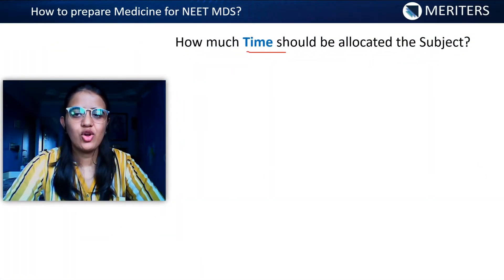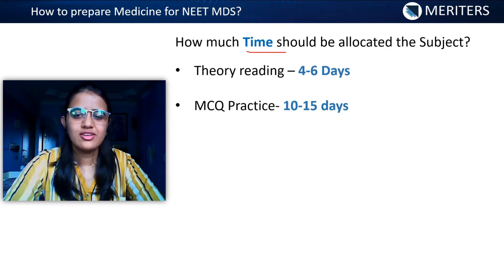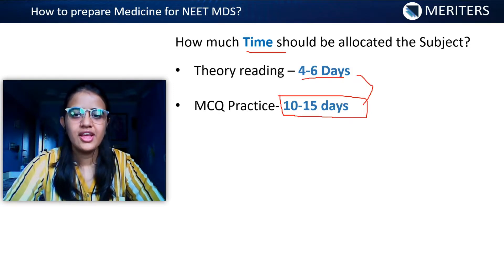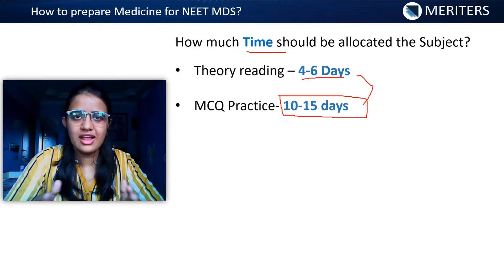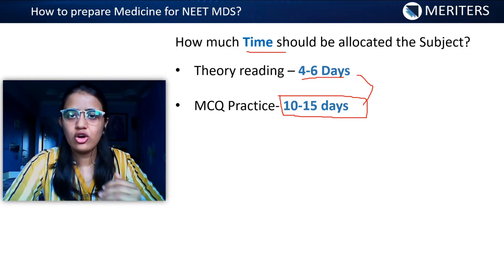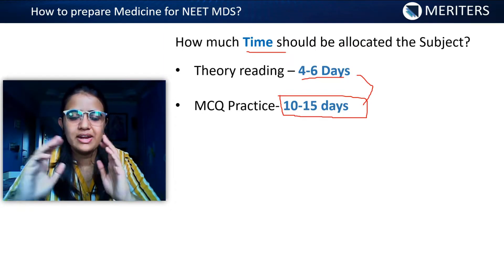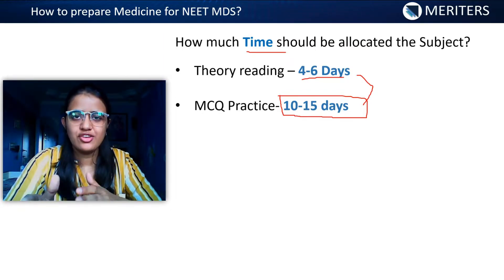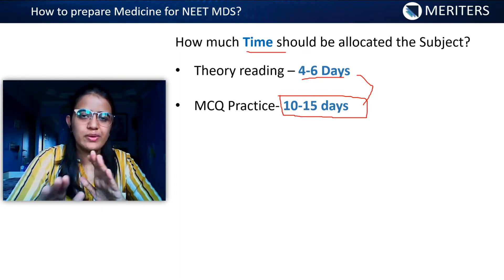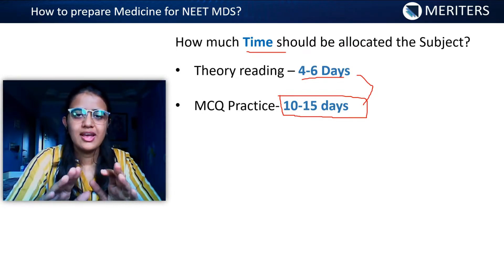What should be the time allocated to this subject? You can complete general medicine within 10 to 15 days, and out of these 10-15 days, you can give around 4 to 6 days to theory. If your theory isn't that good or you are underconfident, you can increase your theory time and extend this by approximately around 5 days plus or minus. This is the ideal time that works for most students — around 10 to 15 days.